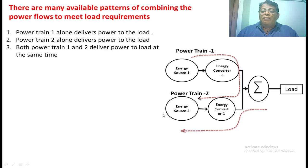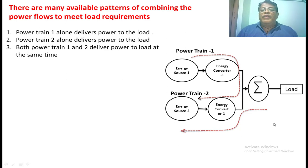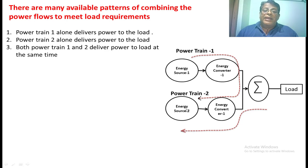The second mode is where power is supplied to the load only by power train 2 — the battery. This is possible when there is some fault and the IC engine is not giving any power; by that time you can extract power from the battery source to run the vehicle. In the third mode, both the IC engine and battery give power to the load simultaneously. This occurs during peak demands, for example when the vehicle is going upward, requiring a large amount of power from both sources.